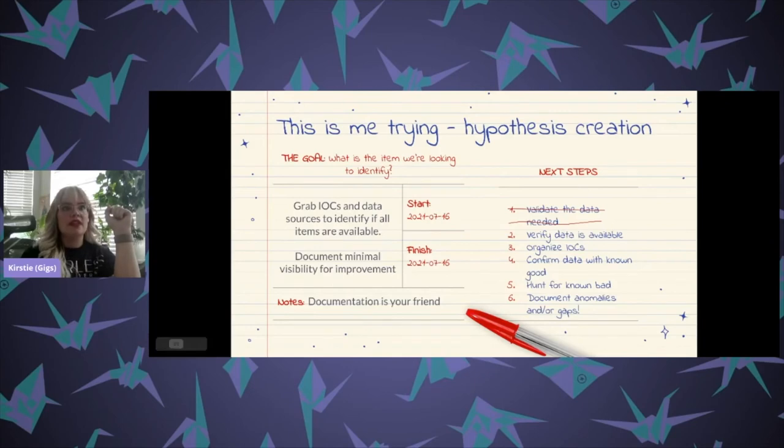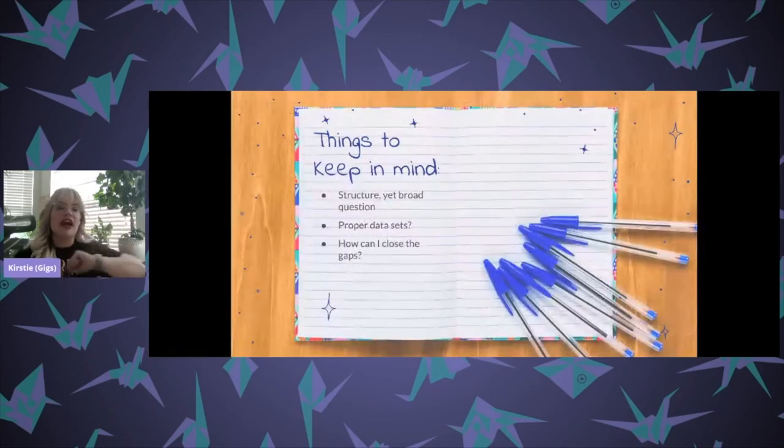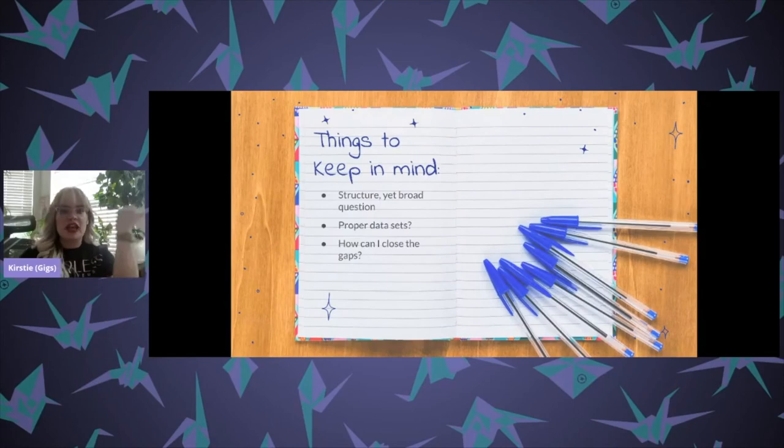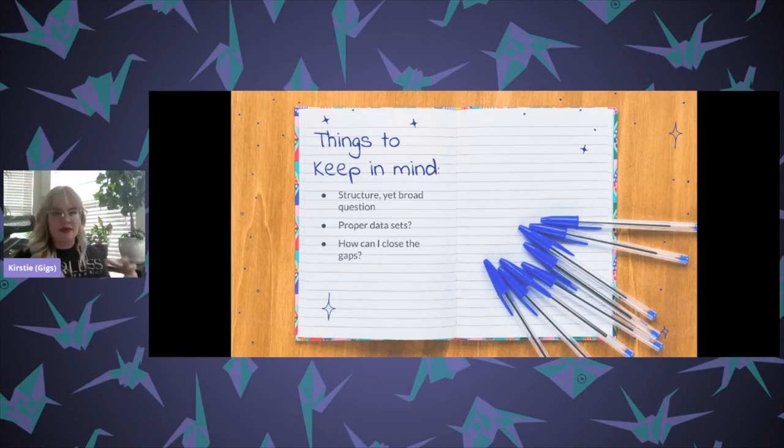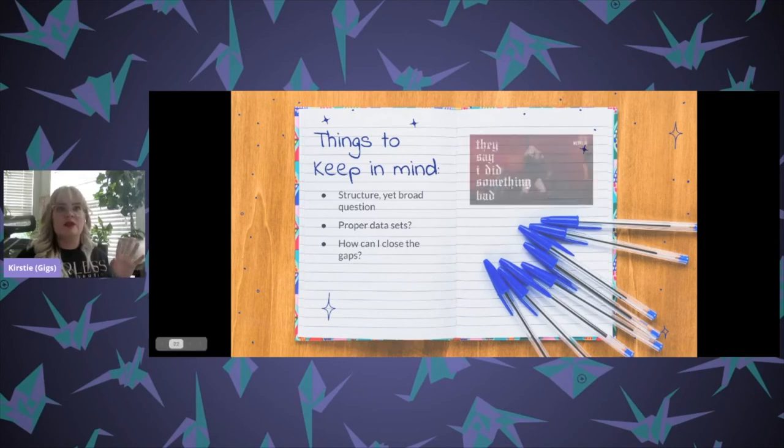So things to keep in mind, making sure that you're acting or you're asking some structured yet broad questions of the data will allow you to let the data do the talking instead of your biases. And then making sure that you have the data that you need to get a reasonable understanding of what is happening within the environment is super important as well. So making sure that you have those proper data sets. And then of course, making sure that you have that standard practice of updating your procedures, creating better detections and putting them all in play.